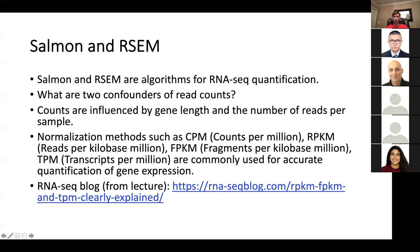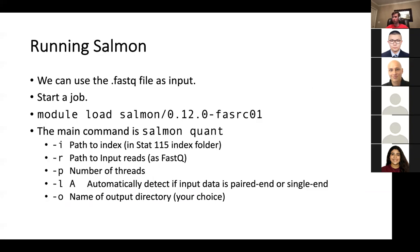I'd suggest watching that lecture video again if you're confused. So Salmon and RSEM are both algorithms that are going to get you these four measurements. Okay, so let's talk about Salmon. Salmon is a pseudo mapper, so it's not actually going to give you a real alignment. It's really just primarily for measuring the amount of gene expression.